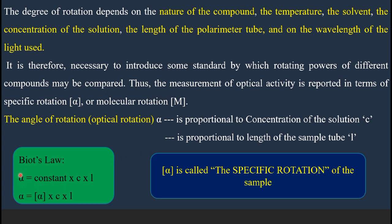Therefore, the observed rotation alpha is proportional to both c and l, and this proportionality can be replaced by a proportionality constant. So alpha equals a constant times concentration times length of the sample tube. This proportionality constant is called the specific rotation of the sample.